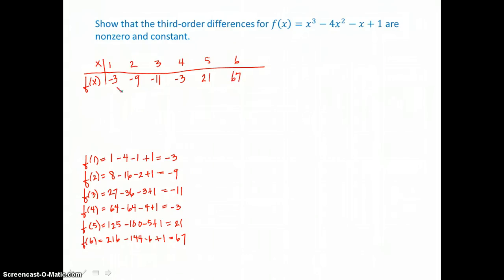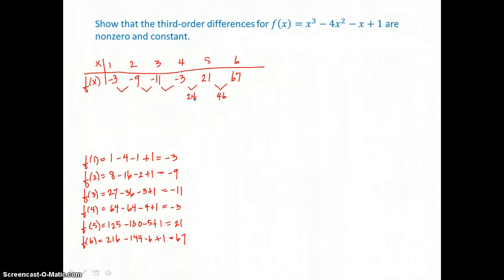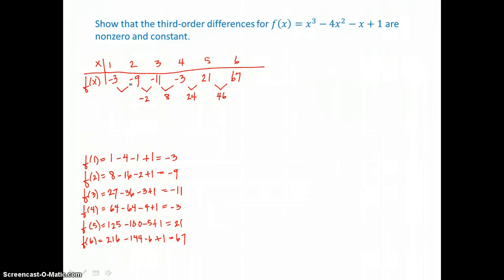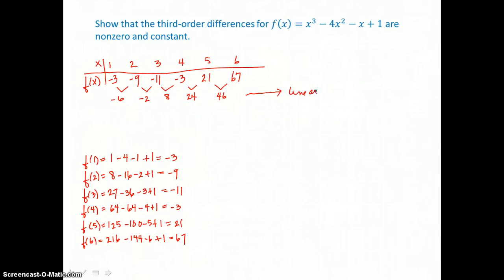Now we're ready to look at first-order differences. Subtracting: 67 take away 21 is 46; 21 take away negative 3 is 24; negative 3 take away negative 11 is 8; negative 11 take away negative 9 is negative 2; and negative 9 take away negative 3 is negative 6. So first-order differences are not non-zero and constant. If they were, that would indicate a linear model of the form y equals mx plus b.